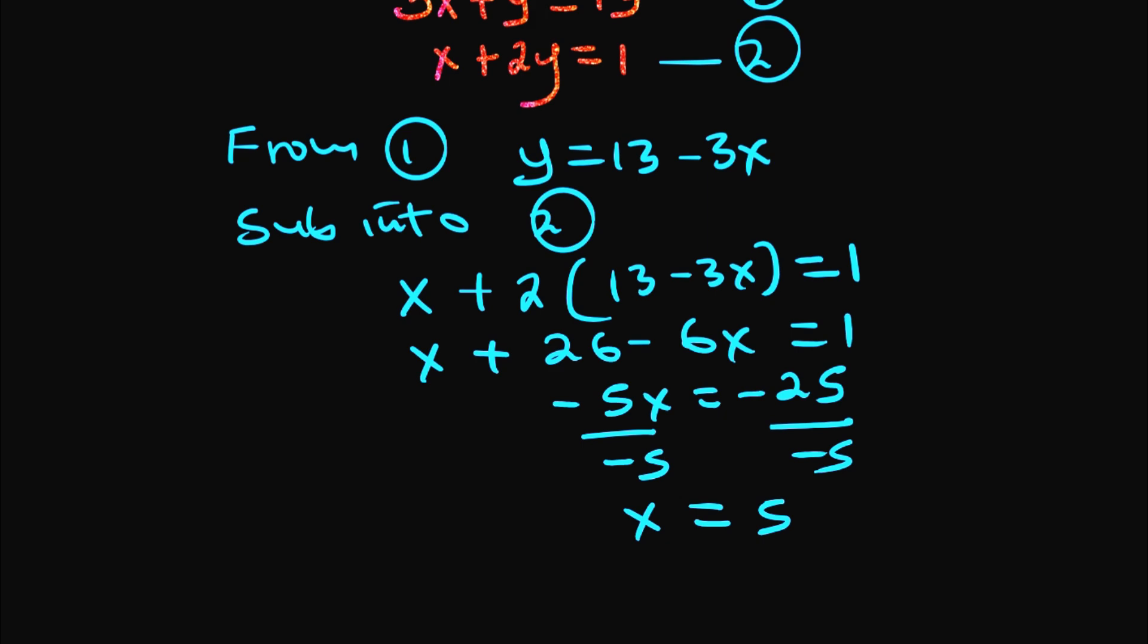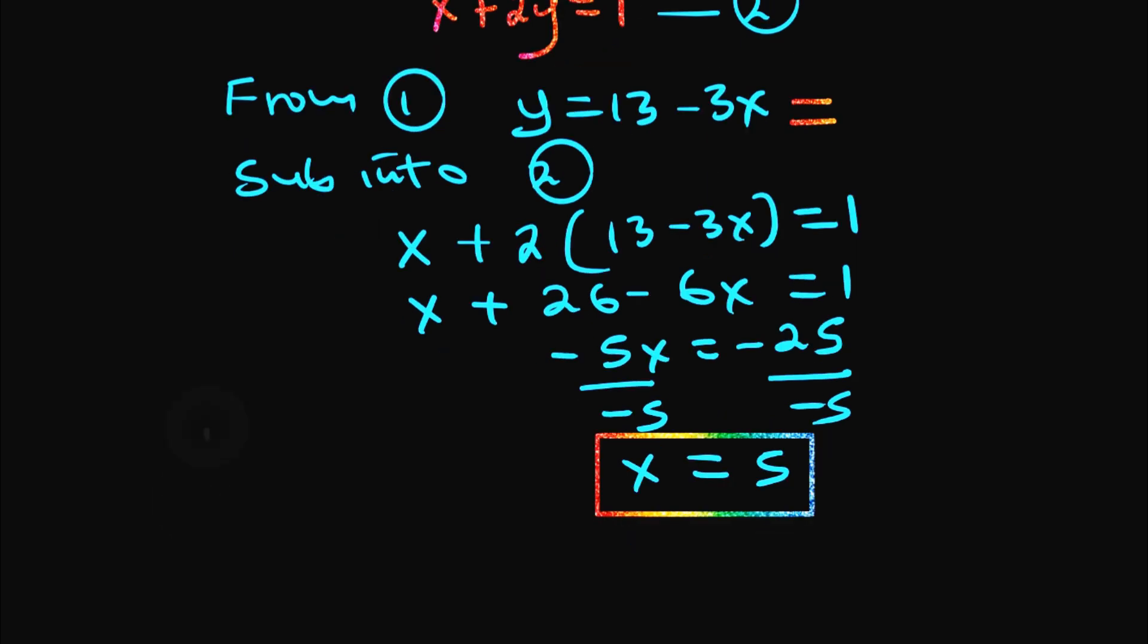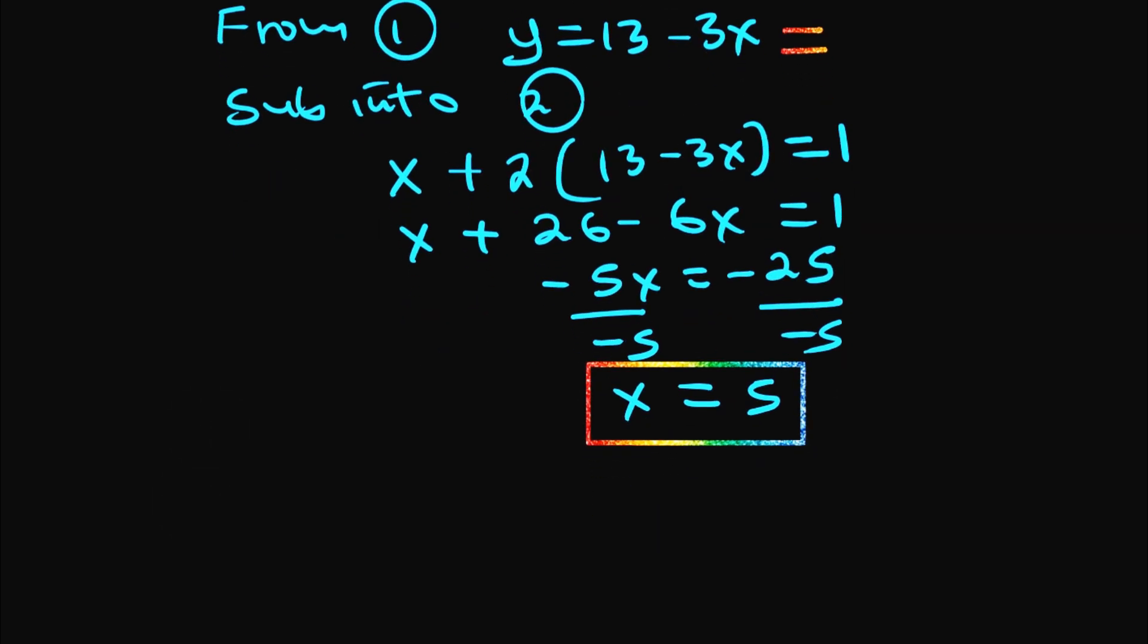So that is the solution for x. Remember we said that y equals 13 minus 3x. So we can use that information to obtain the value of y. So y, as we said, is 13 minus 3x. That is just 13 minus 3 times 5. That is 13 minus 15, which is just negative 2 as the value of y.